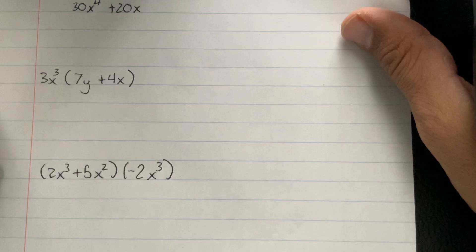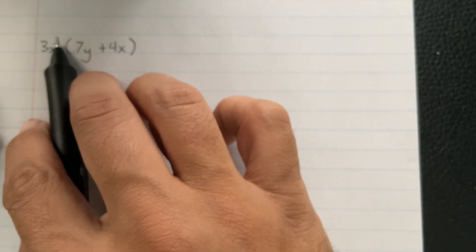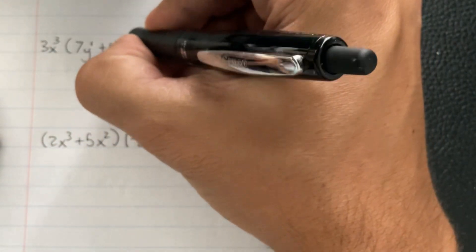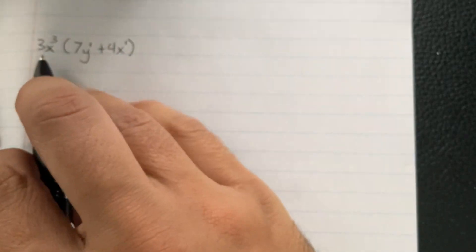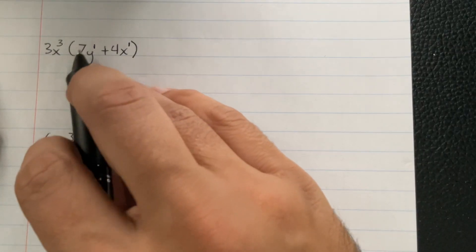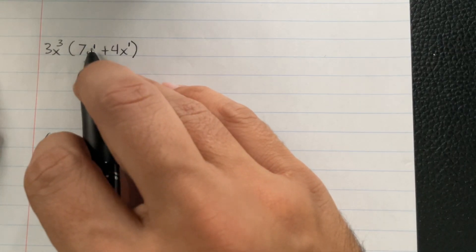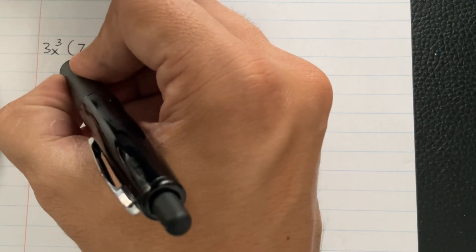All right. Now let's shift over here. Let's do it again. So 3x³ is going to multiply with everything over here. So there's 1y and 1x. So it's going to be 3x³ times 7y¹. So the 3 and the 7 are going to make 21.